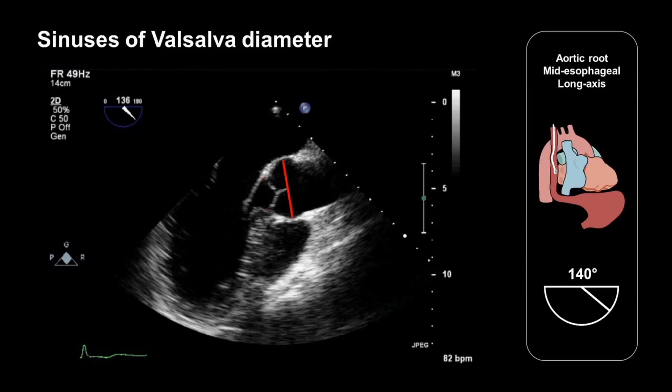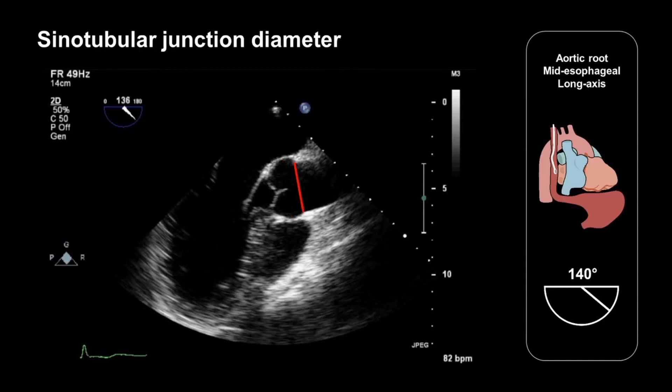Next, we should measure the diameter at the level of the sinuses of Valsalva. The normal range here is between 2.4 and 4.0 centimetres. Next, we should measure the sinotubular junction diameter, the normal range being 2.2 to 3.6 centimetres.